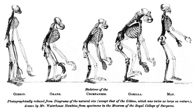Evidence as to Man's Place in Nature is an 1863 book by Thomas Henry Huxley, in which he gives evidence for the evolution of man and apes from a common ancestor. It was the first book devoted to the topic of human evolution, and discussed much of the anatomical and other evidence. Backed by this evidence, the book proposed to a wide readership that evolution applied as fully to man as to all other life.